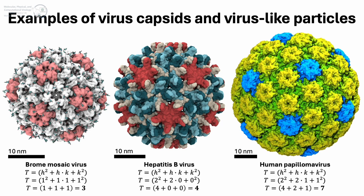Here are images of the three capsids my group currently works on. On the left is a superfluorescent virus-like particle based on the capsid of the brome mosaic virus, a T=3 icosahedron with about 3 million atoms in explicit solvent. In the center is the hepatitis B virus capsid, a T=4 icosahedron with about 6 million atoms. On the right is the human papillomavirus capsid — the L1 protein virus-like particle, the main antigen in anti-HPV vaccines — a T=7 icosahedron with about 16 million atoms. Despite all being icosahedral, these systems behave differently during simulations and each requires special care to equilibrate.